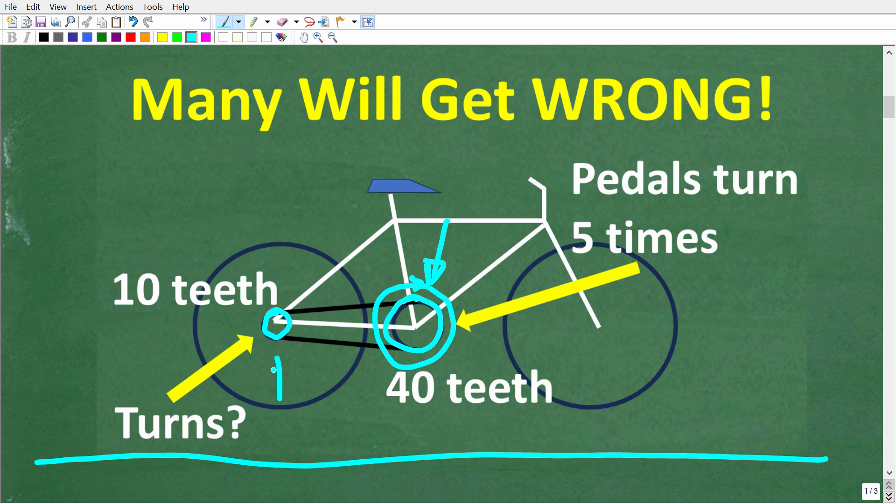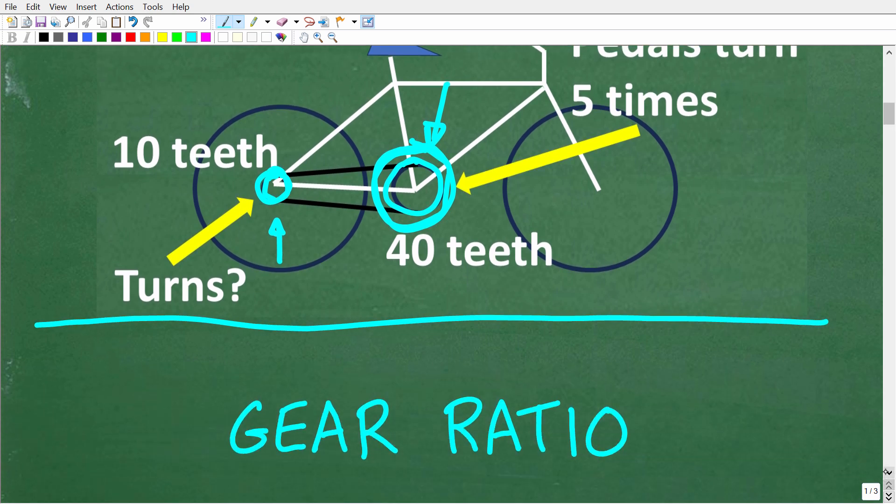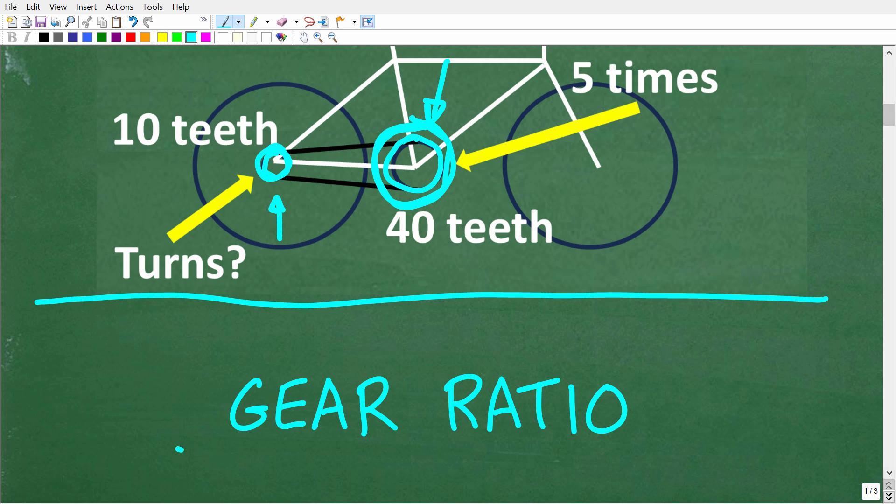So, the question is, how many times is this small gear going to turn for every one revolution of this big gear? So, this really brings us to the main topic of this video and that is something called gear ratios. So, we need to look at the gear ratio here and once we understand that, solving this problem is going to be very easy.